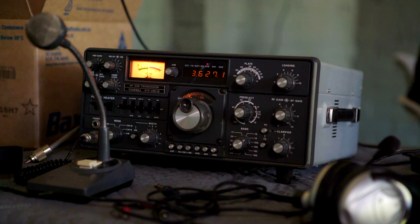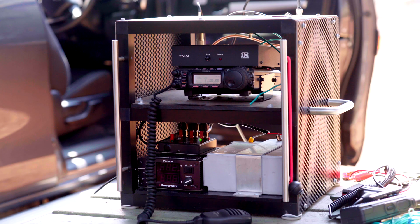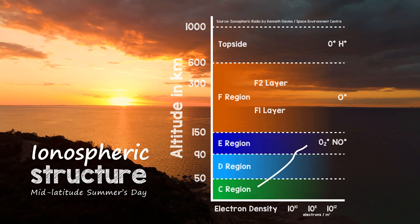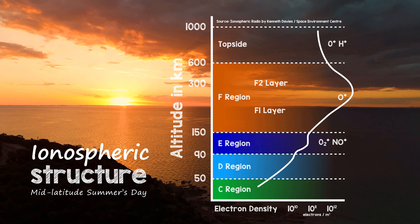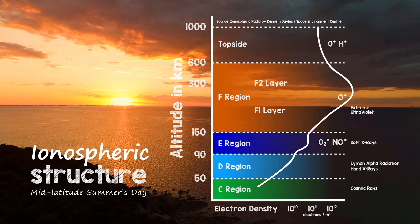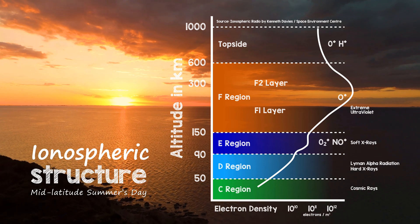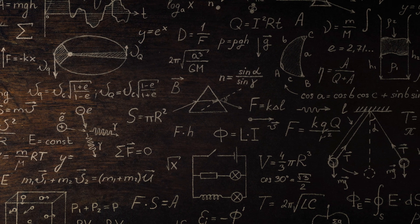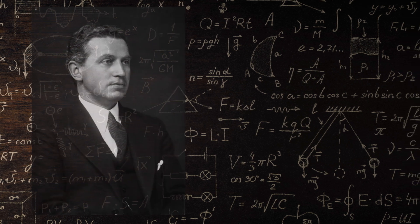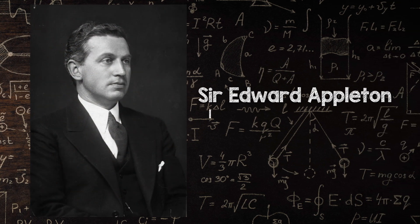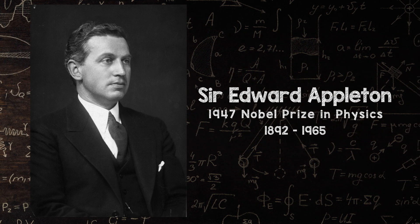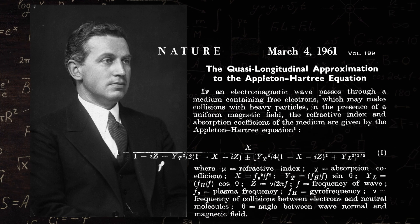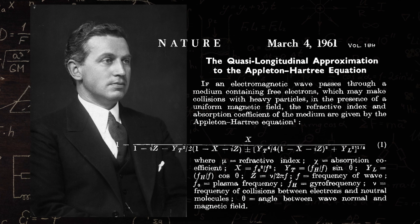High frequencies are still used extensively for long-distance broadcasting and point-to-point communications. The mathematical theory of radio propagation in the ionosphere in the presence of the Earth's magnetic field was developed in the 1920s by British physicist Sir Edward Appleton. The formula for the refractive index is usually associated with his name. What we know as the F layer today is also known as the Appleton layer.